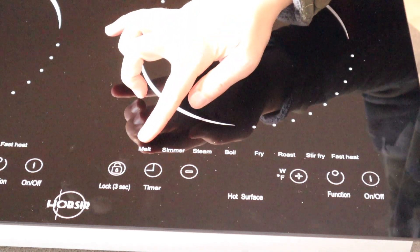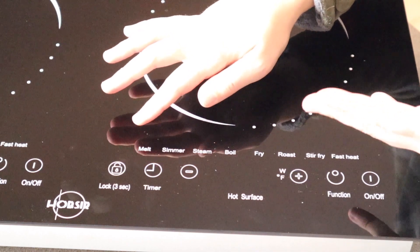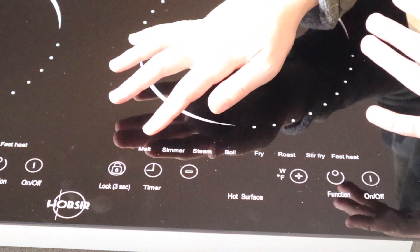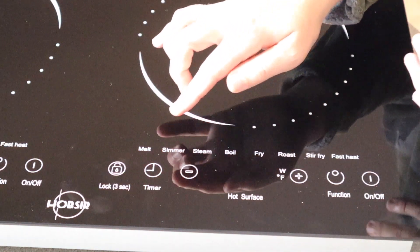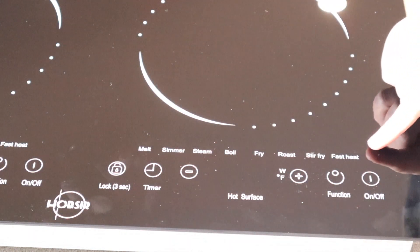Essentially these are going to start at the lowest temperature over here on this side. For example, melt is going to be the lowest temperature, and then it's going to be a little bit higher temperature for simmer and steam and boil, and then fast heat over here is going to be the highest temperature.